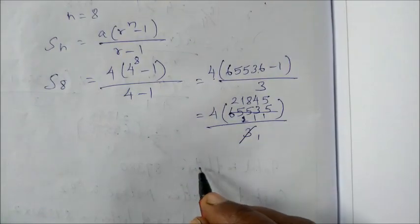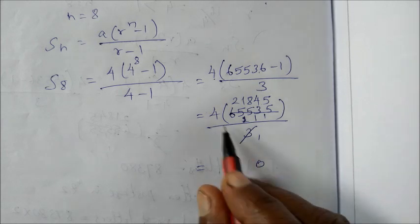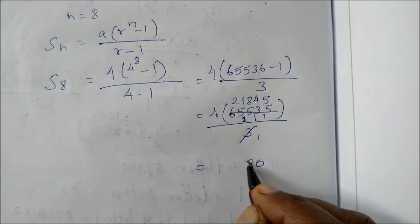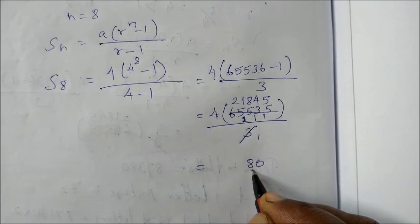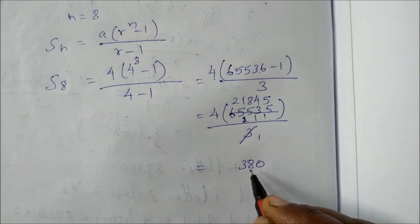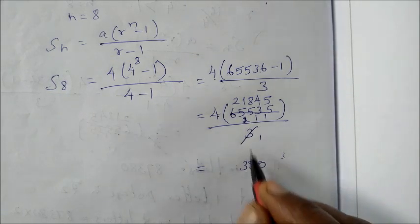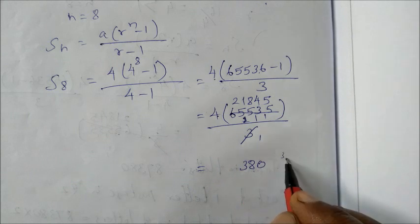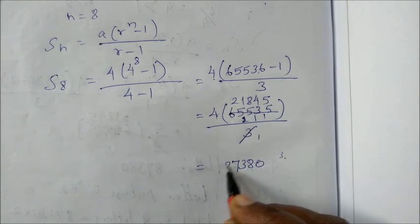Now multiply by 4. 5 times 4 is 20, balance 2. 16 plus 2 is 18, balance 1. 32 plus 1 is 33, balance 3. 4 plus 3 is 7, and 2 times 4 is 8. So we get 87380.